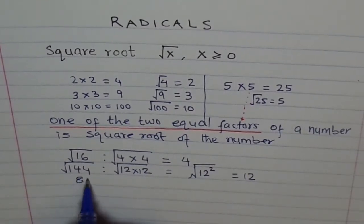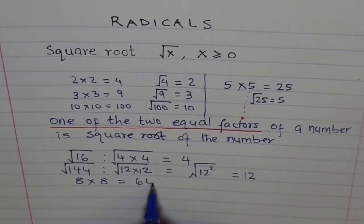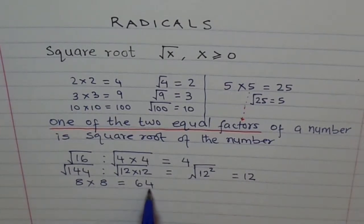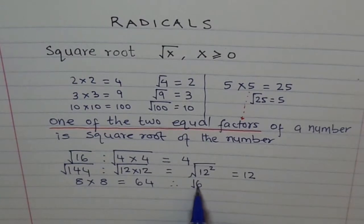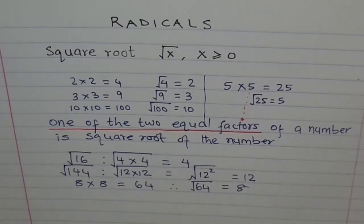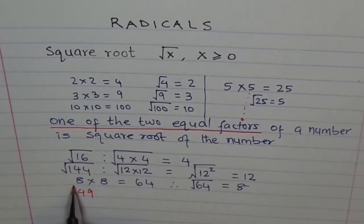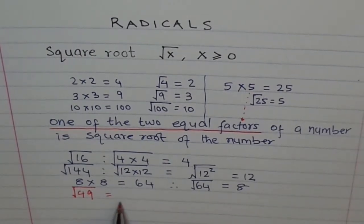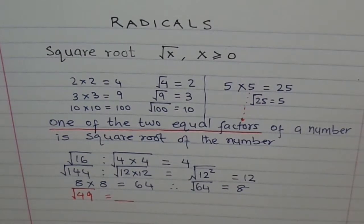8 times 8 equals 64. These two are equal factors of 64. Therefore, square root of 64 is equal to 8. Now try these questions: what is square root of 49? 7 times 7 is 49, therefore square root of 49 is 7.